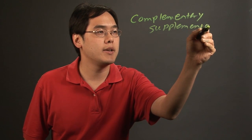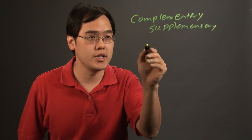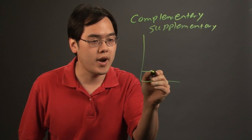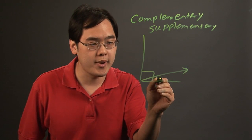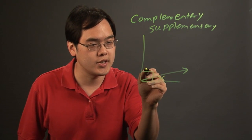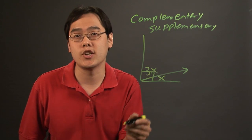Now complementary angles are angles whose sum is going to give you 90 degrees, so typically speaking if you have a right angle and you're splitting it up into two separate angles, you might have x for example and then let's just say 3x as an illustration.